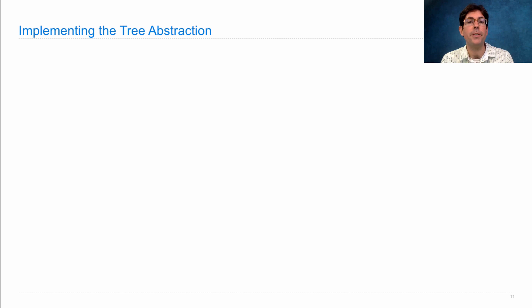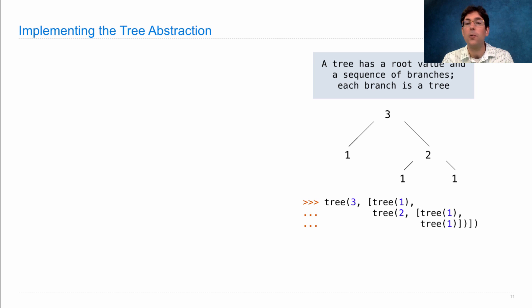Here's an implementation of the tree abstraction. A tree has a root value and a sequence of branches. Each branch is a tree. So if I want to represent this, I'll create it by passing in the root value 3, and then the sequence of branches, where this branch is a tree, and this branch is a tree as well, with root values 1 and 2 respectively.